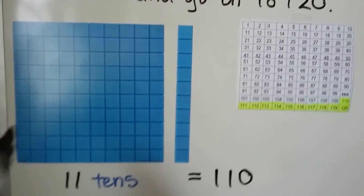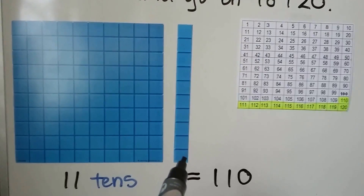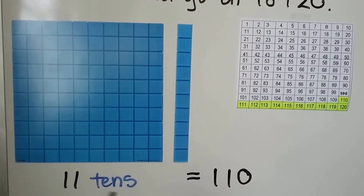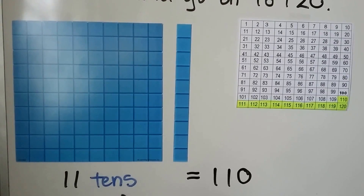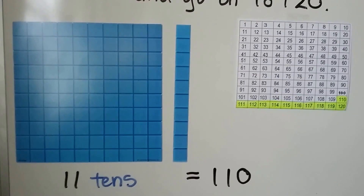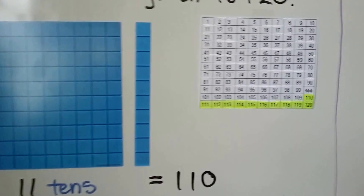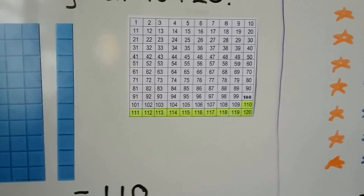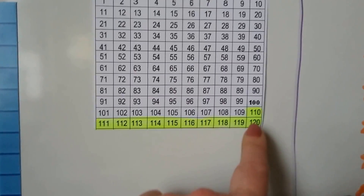Here we have ten tens and one more ten. That means we have 11 tens. That's equal to 110. We can look at our chart. Here's 110.